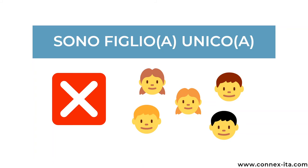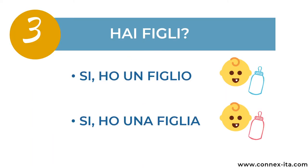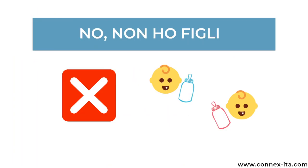If you don't have brothers and sisters then you can reply Sono figlio unico, meaning you are an only child — Sono figlio unico if you are a boy, or Sono figlia unica if you are a girl. Our last example is the question about kids: Hai figli? If you have a son you answer Sì, ho un figlio, or Sì, ho una figlia if you have a daughter. Whereas if you don't have any kids you can just say No, non ho figli.